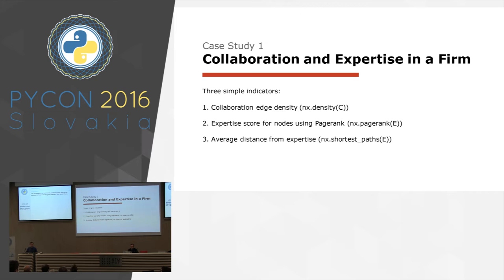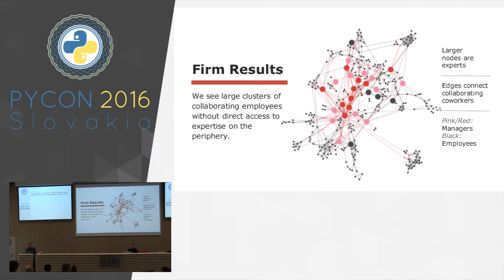We have two kinds of graphs: the collaboration relationship graph and the expertise nominations graph. From this, we create simple indicators. We take the collaboration graph's density, generate an expertise score for nodes using PageRank on the expertise graph — PageRank is basically how Google won the search engine wars — and we also calculate the average distance from expertise in the graph. The result shows a large cluster of collaborating employees without direct access to expertise on the periphery. Large nodes are the experts, edges connect people with collaboration relationships, pink and red are managers, and black are employees. This single picture and the underlying data give the firm many interesting insights.